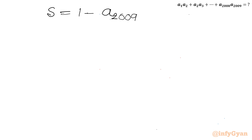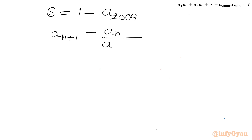So S = a_1 - a_{2009}. Now we need to calculate a_{2009}. Let me write the general formula first: a_{n+1} = a_n / (a_n + 1).